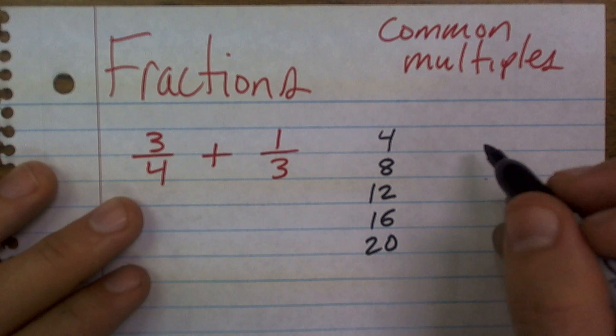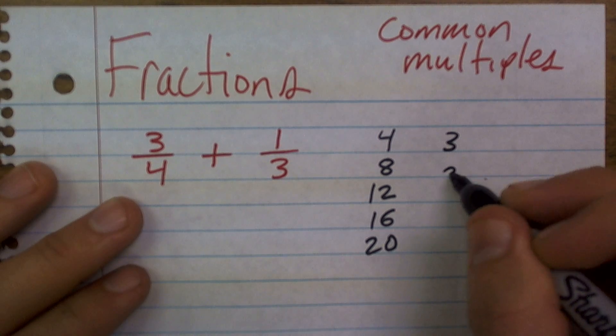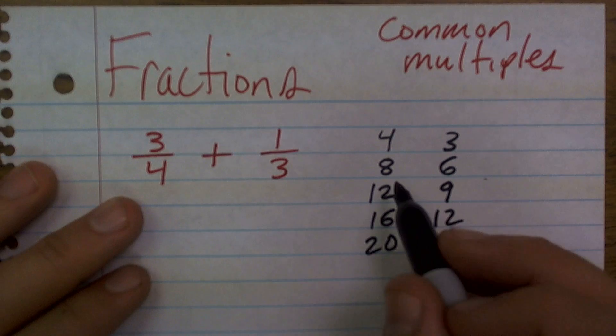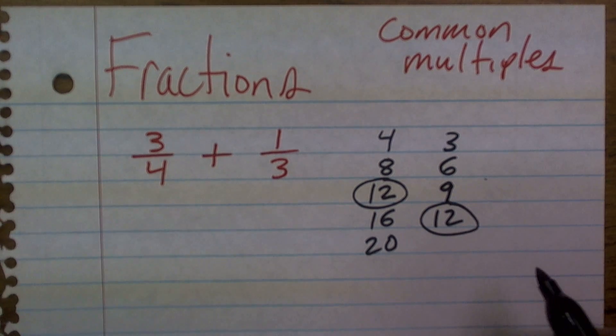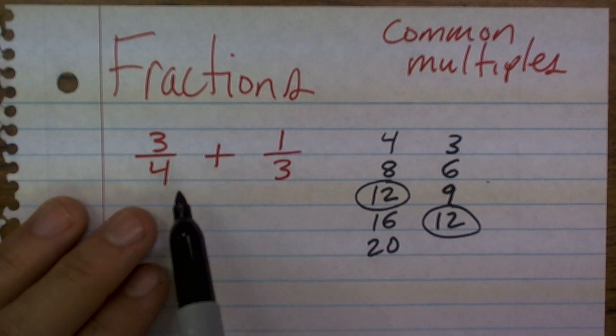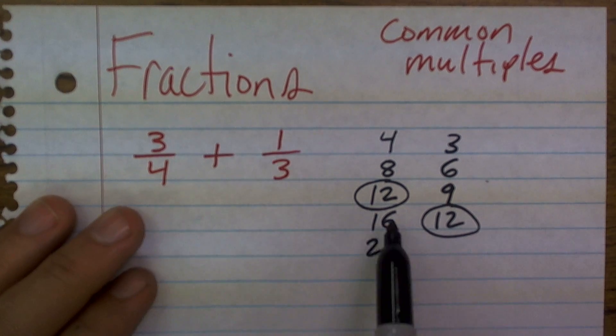Then if I list the multiples of 3, I get 3, 6, 9, 12, and I'll stop right there. As you can see, that they share a common multiple 12. So what that means is 4 and 3 both go into my multiple 12.